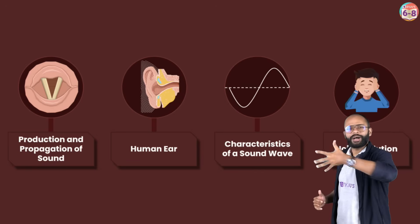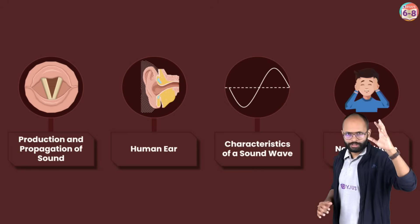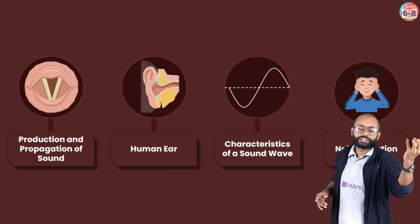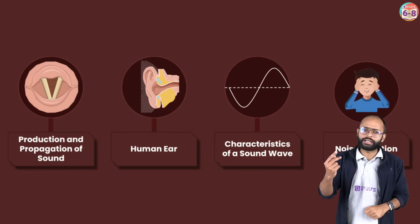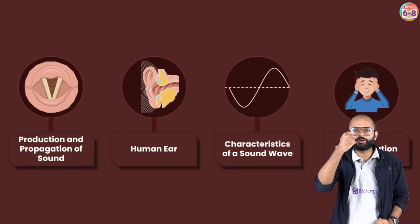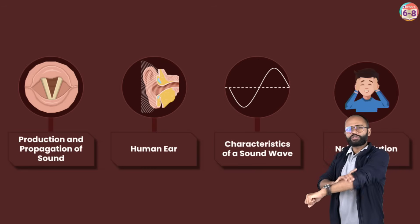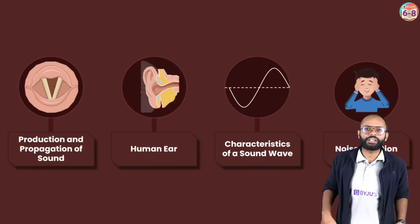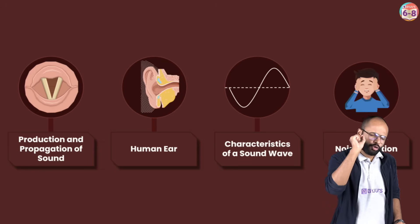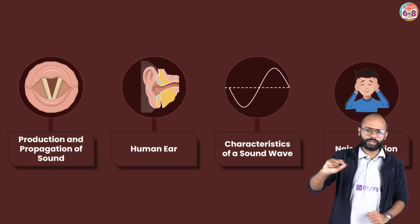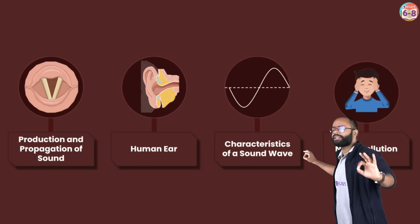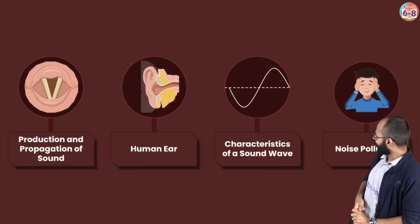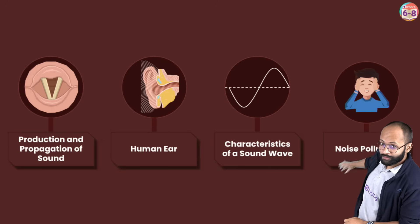Propagation means passing through — the medium through which sound travels. So the first thing is how sound is produced, the second is how it propagates. Third, how will you hear? Through ears — that's the second topic. First is production and propagation. Second is hearing, which involves the human ear. Then we have characteristics of sound wave — the only numerical possible in this chapter is from this topic.